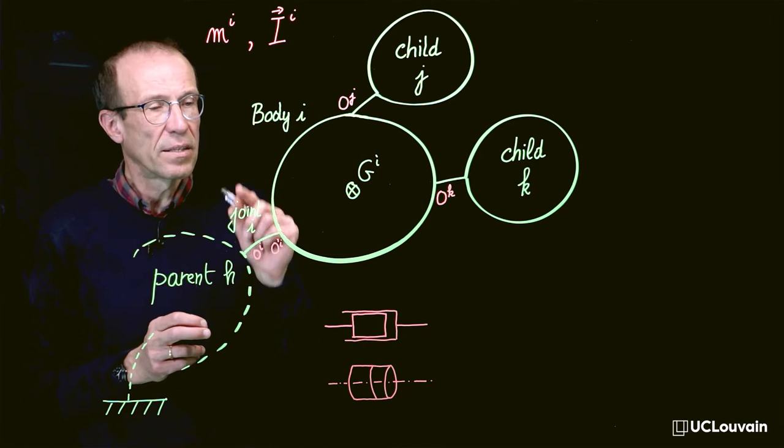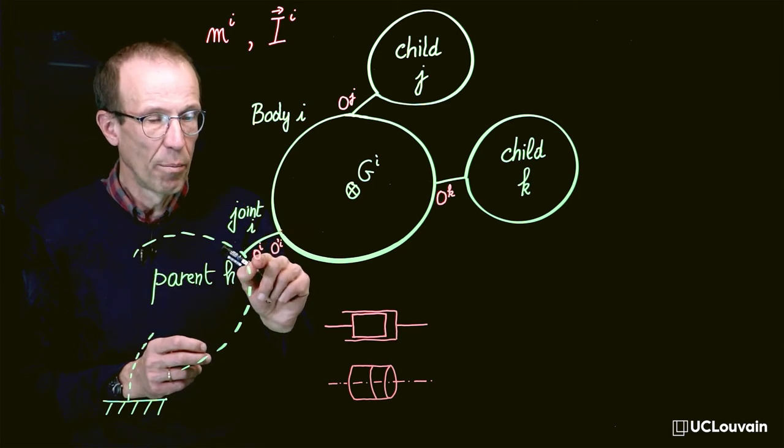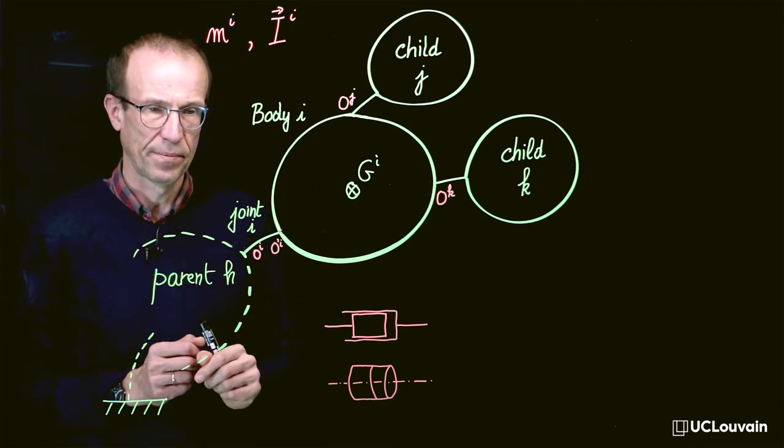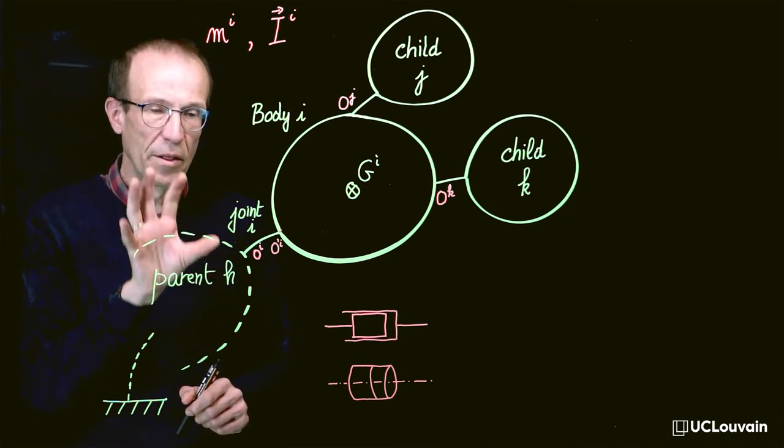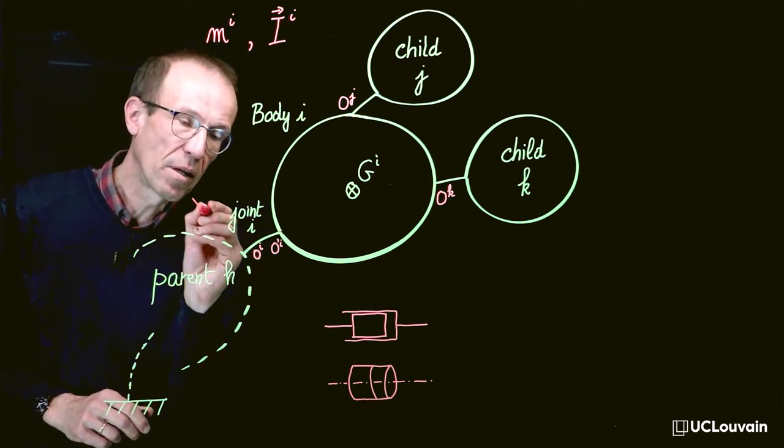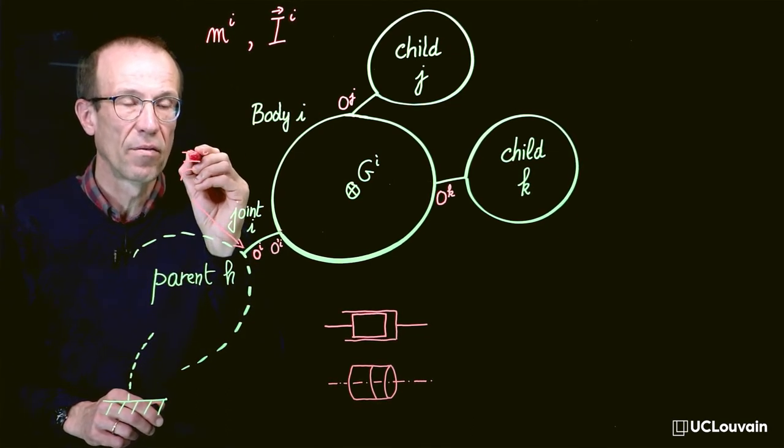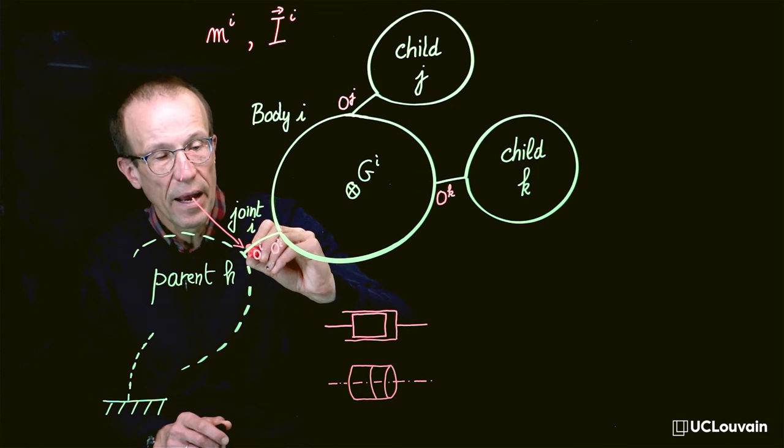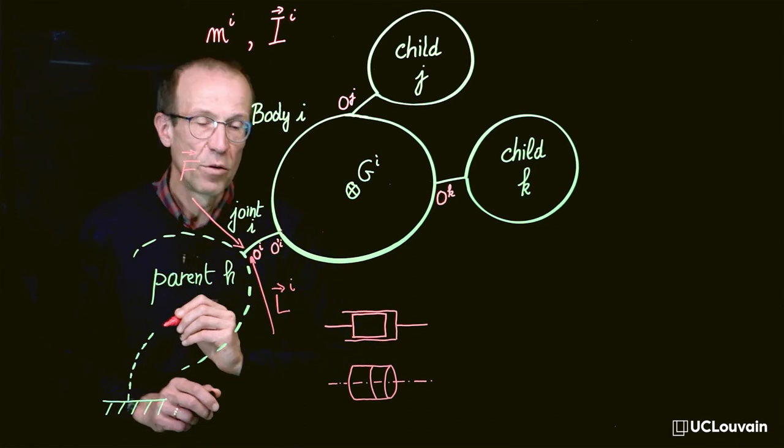Joints are connected to bodies through anchor points, typically for joint I, point O'I on parent H and point O'I on body I. At this point I compute the forces and the torque acting between these two bodies under the form of a resultant vector denoted Fi for the force acting from the parent to the body I at point O'I, and Li for the pure torque between these two bodies.